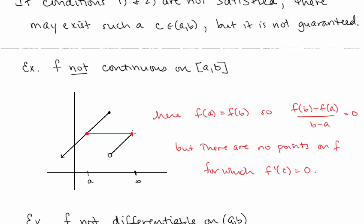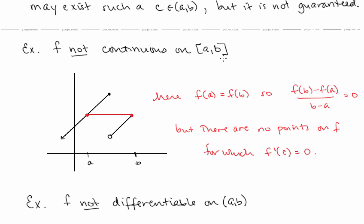The first condition is that f is continuous on the closed interval [a,b]. Let's take a look at an example where f is not continuous on the closed interval [a,b]. Notice here I drew this up so that f(a) equals f(b), so that secant slope is equal to 0. But notice there's no point on this function's graph for which the tangent line slope is equal to 0, so there is no such c value in this case.